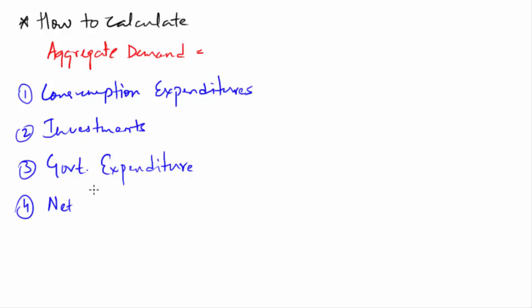And the fourth component is net exports. Now net exports is the difference between total exports and total imports. Alright then, once you have all these components you need to arrange them in this formula. It is going to be AD equals C plus I plus G plus X minus M.